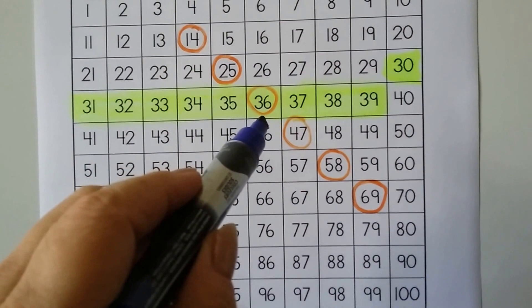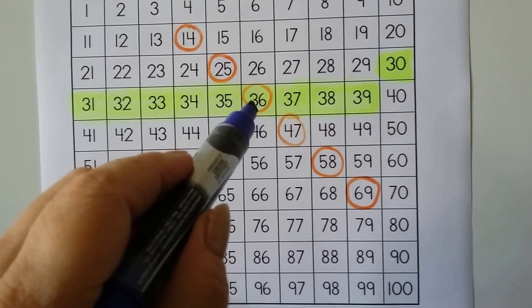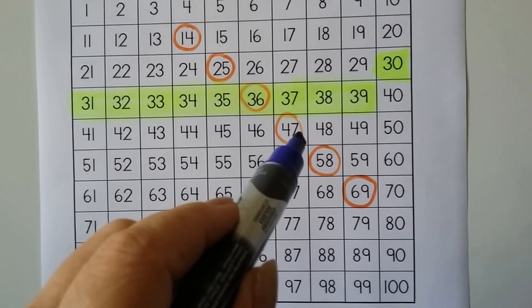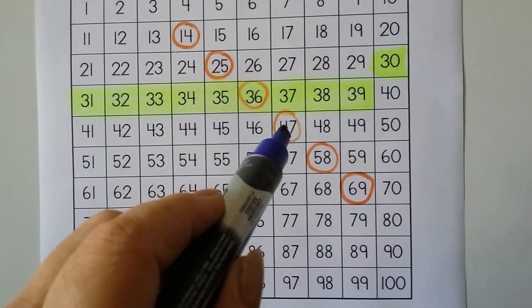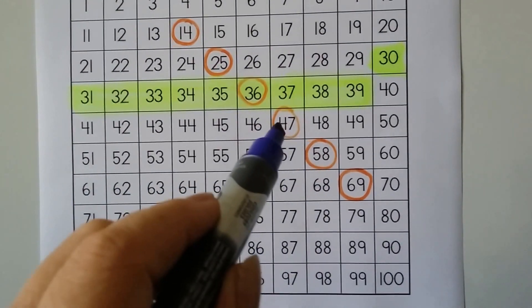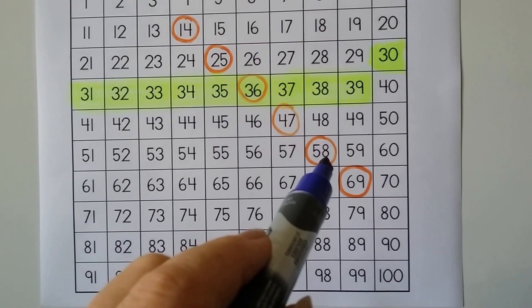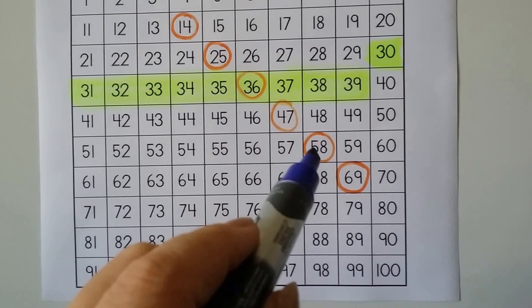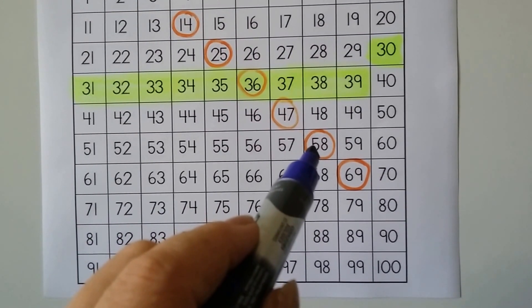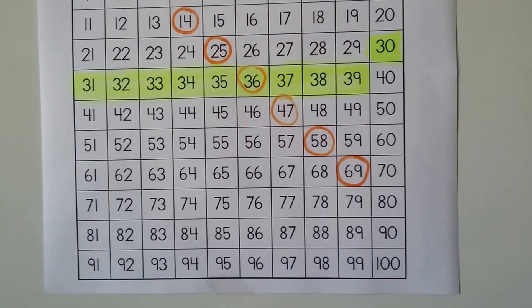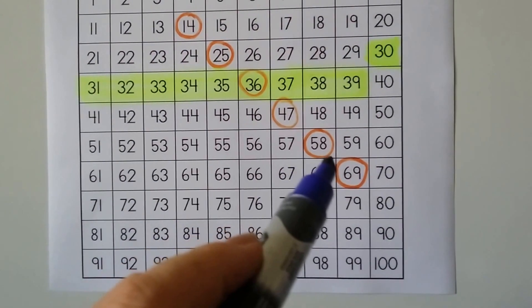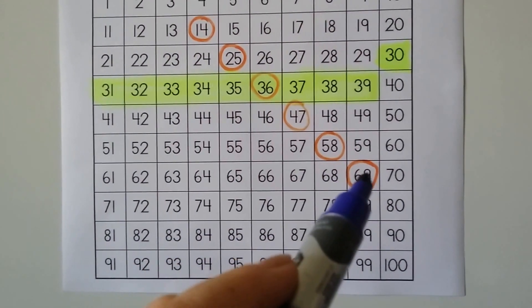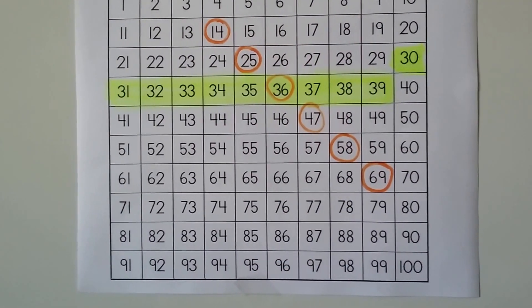So each number I circled, there are 3 more ones than tens. For 36, the 6 has 3 more ones than there are tens. For 47, there's 3 more ones than there are tens. 4 plus 3 is 7. For 58, there's 3 more ones than there are tens. 5 plus 3 would be 8 ones. So see how it's 3 more ones than there are tens.